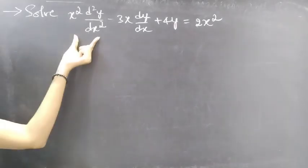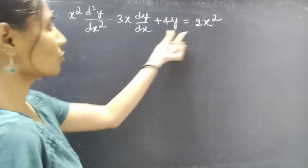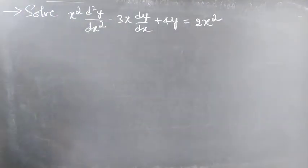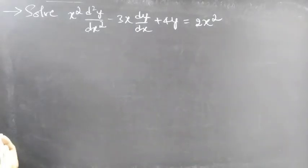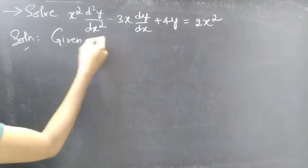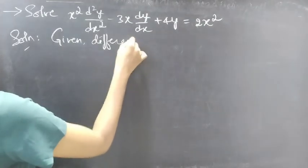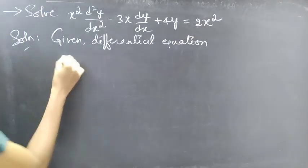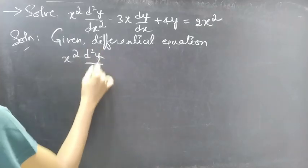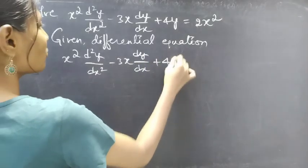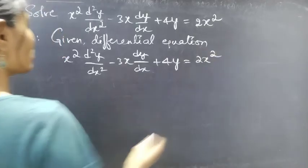Problem: solve x² d²y/dx² minus 3x dy/dx plus 4y equals 2x². So we are given a differential equation with variable coefficients.